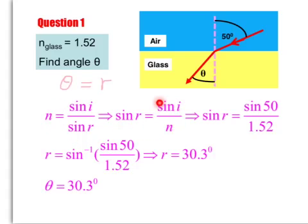Rearrange it so that sine r is the subject because we are asked to find r. And you can work through these details yourself. Finally, r is equal to 30.3 degrees. In other words, theta is equal to 30.3 degrees.